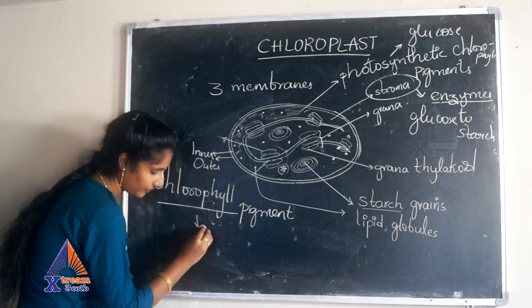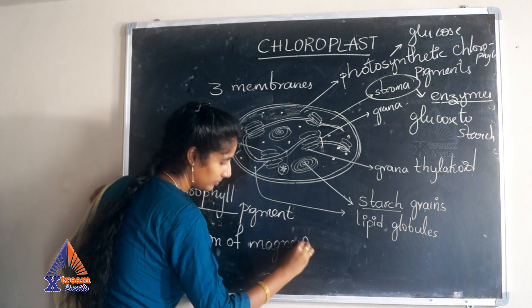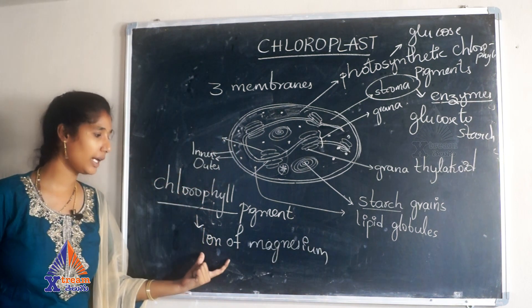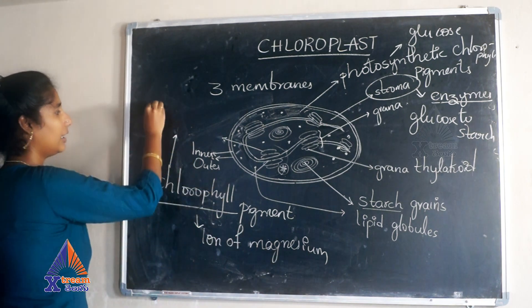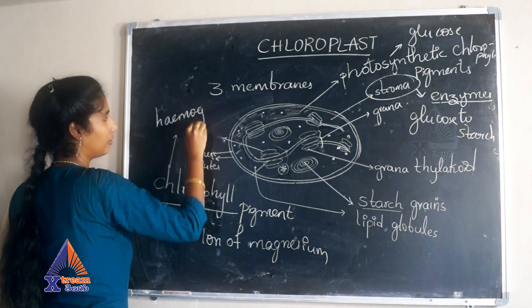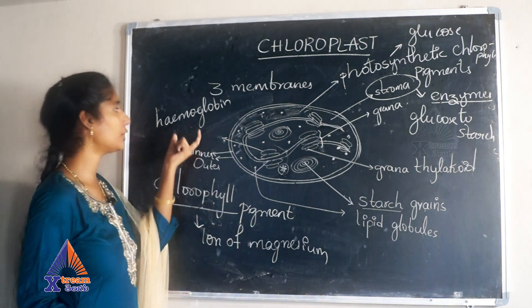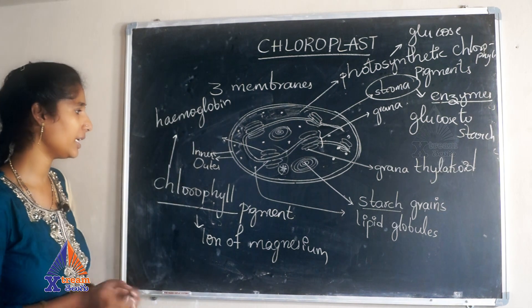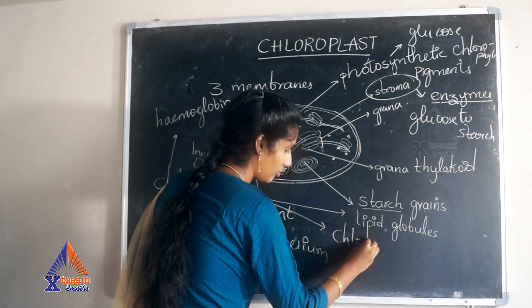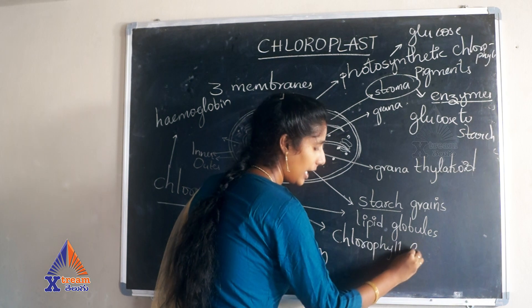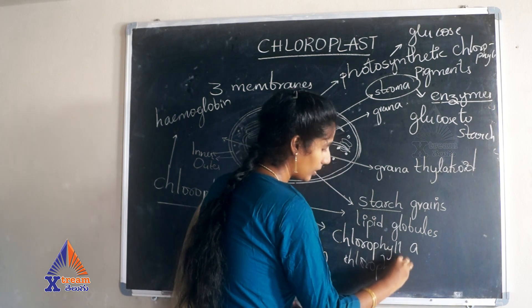One chlorophyll molecule contains one ion of magnesium. This is similar to hemoglobin in human beings — the chlorophyll pigment is analogous to hemoglobin. Chlorophyll is of two types: Chlorophyll A and Chlorophyll B.